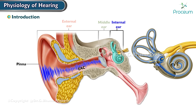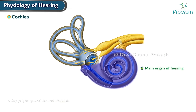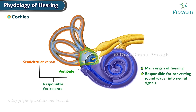The inner ear is located deep within the temporal bone of the skull. The inner ear consists of the cochlea, vestibule, and semicircular canals. The cochlea is the main organ of hearing and is responsible for converting sound waves into neural signals. The vestibule and semicircular canals are responsible for balance.